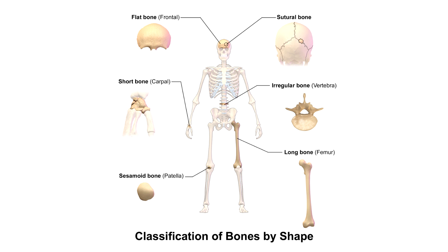Irregular bones are another type and they have a unique and complex shape. They're usually short, flat, and ridged, and they're quite unique to the location that they're actually in. This can include several bones of the skull, the vertebrae, and the hip bones, which are all examples of irregular bones.